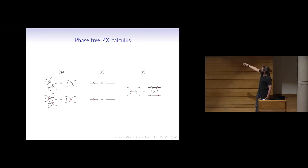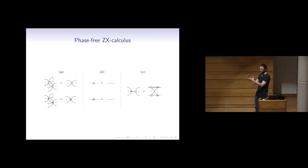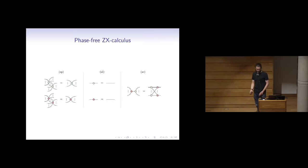Strong complementarity says: if a red dot touches a green dot, these two can trade places. If there are m things at the input, this becomes m green spiders, and if there are n here it becomes n red spiders, all connected to each other in a totally bipartite graph. So this is actually a family of rules, and in some sense the most powerful rule in this collection.